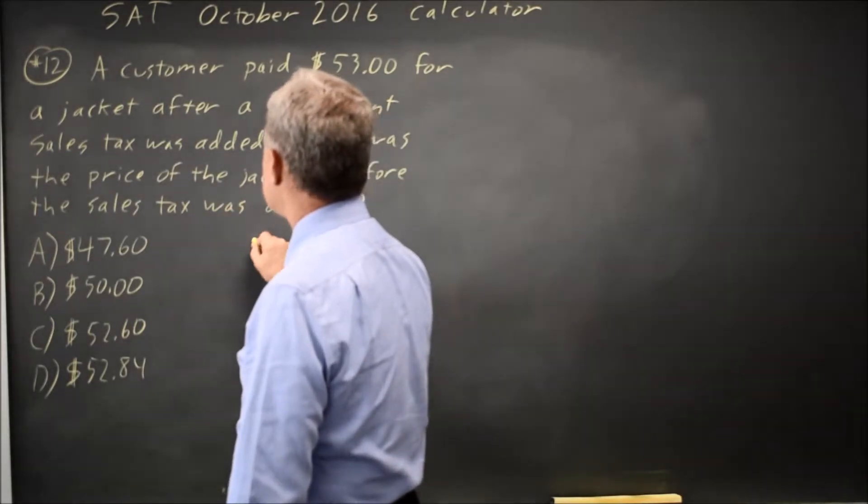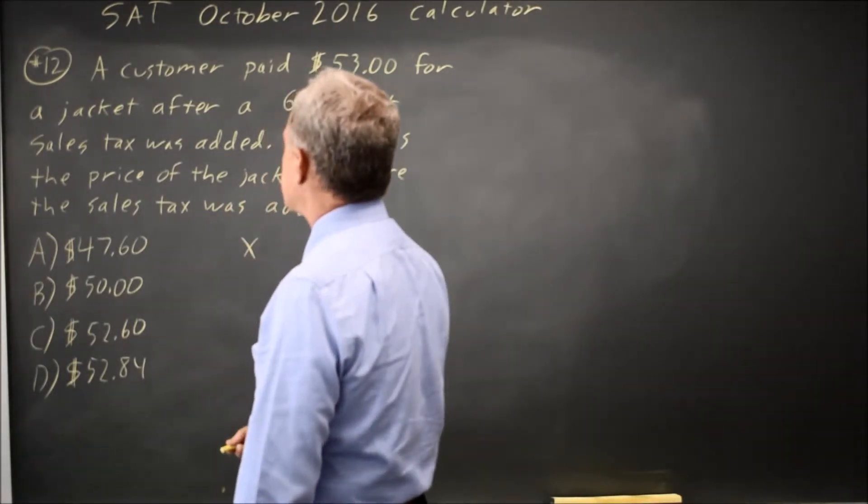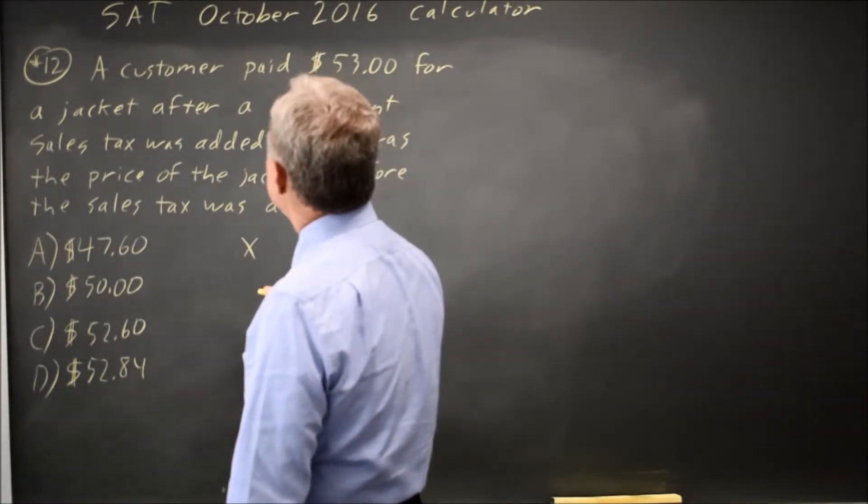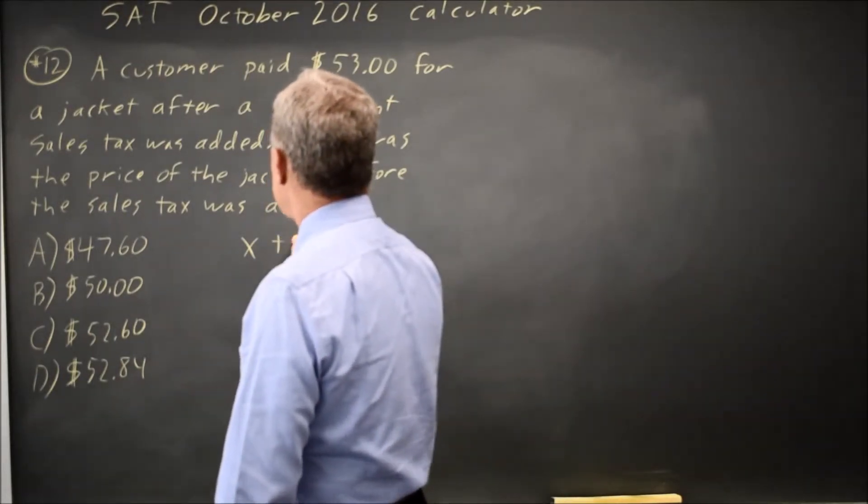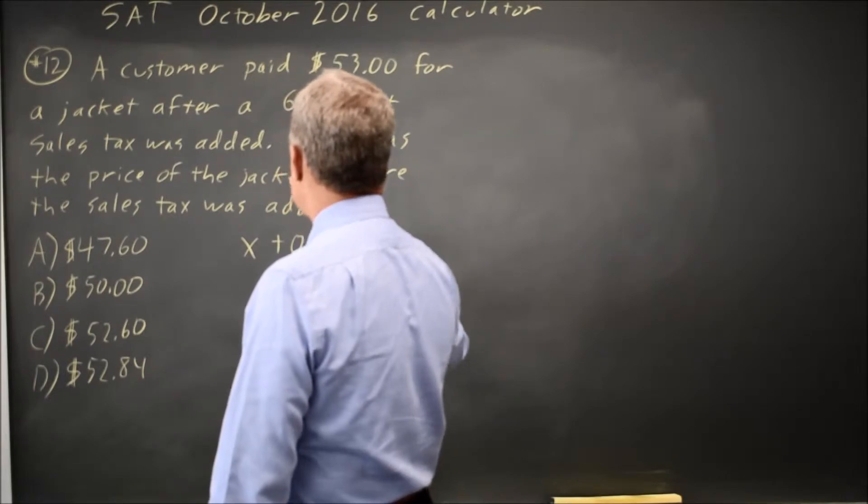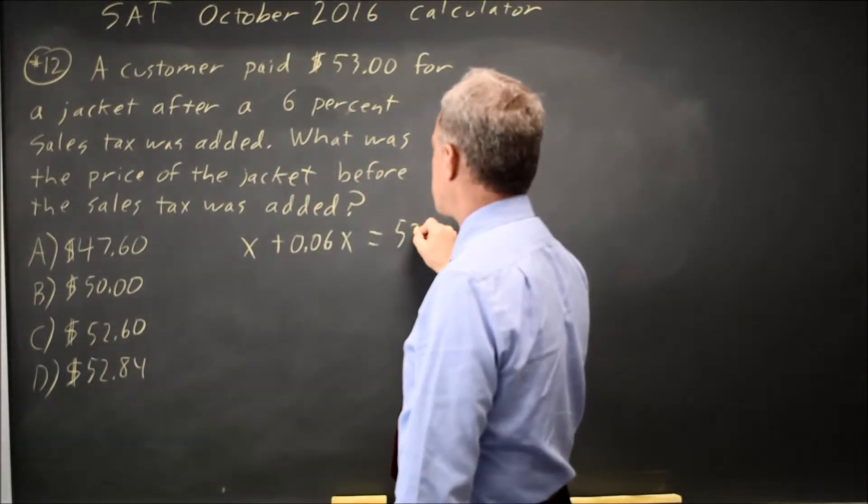Now, we're looking for the price X of the jacket without sales tax. And sales tax is 6% of X. So if you take X plus 0.06 times X, that gives you the total price, which is 53.